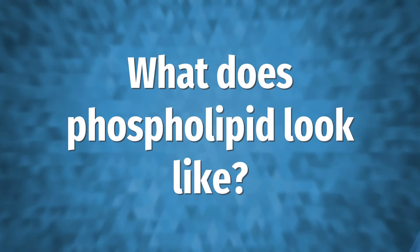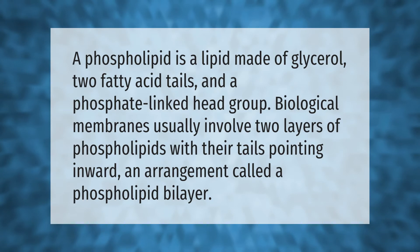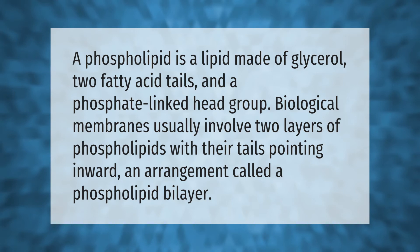A phospholipid is a lipid made of glycerol, two fatty acid tails, and a phosphate-linked head group. Biological membranes usually involve two layers of phospholipids with their tails pointing inward, an arrangement called a phospholipid bilayer.